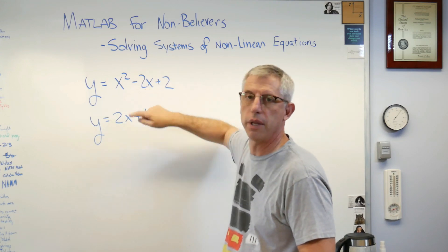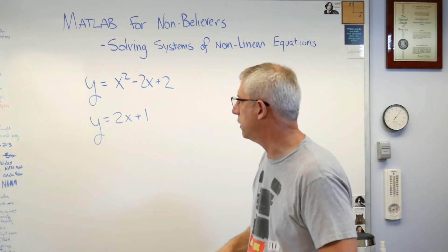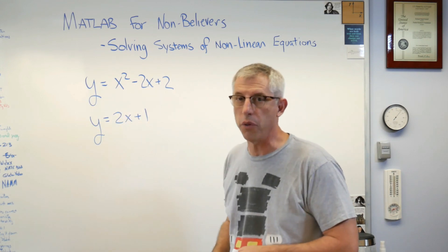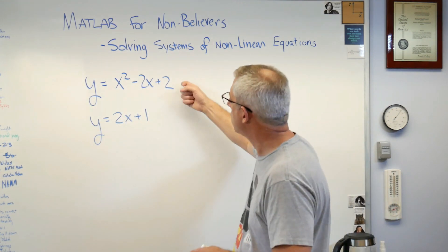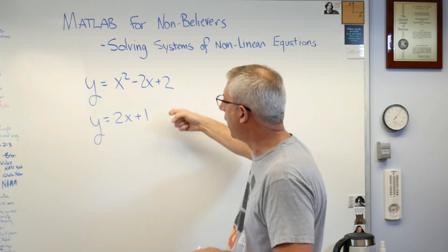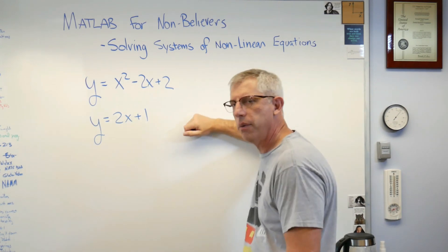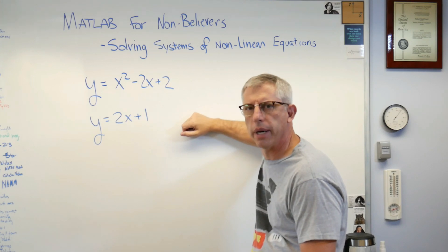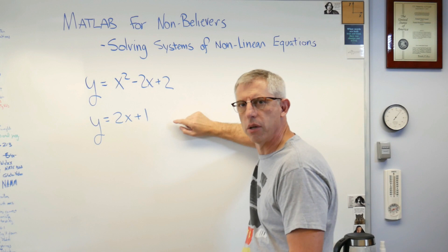This equation is a parabola; that one's a straight line. This one's curved, this one's straight. The fact that even one of these is curved means it's a nonlinear system, and the fact that both variables appear in both equations makes it coupled — so you can't just solve one and then the other.